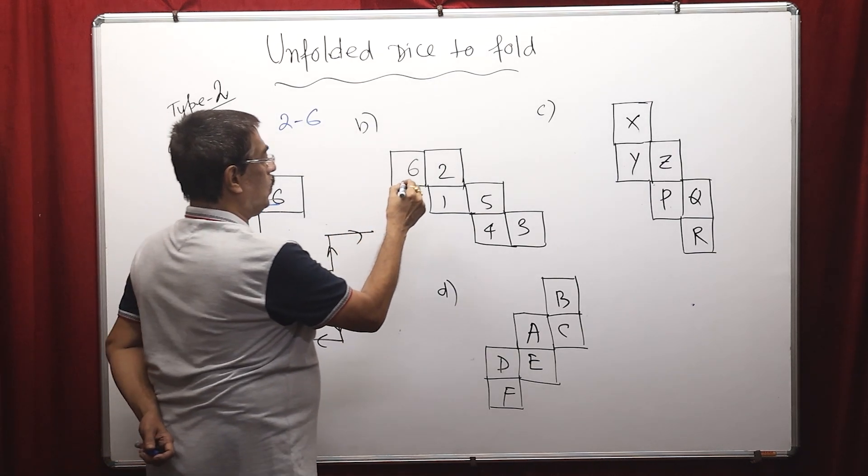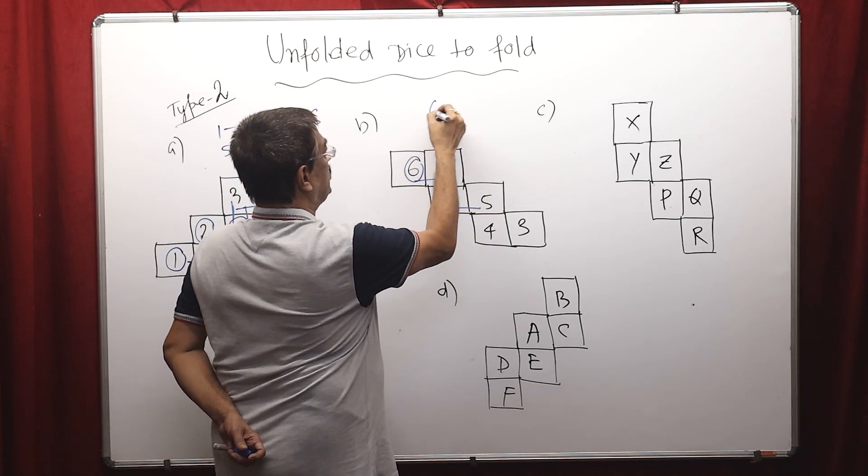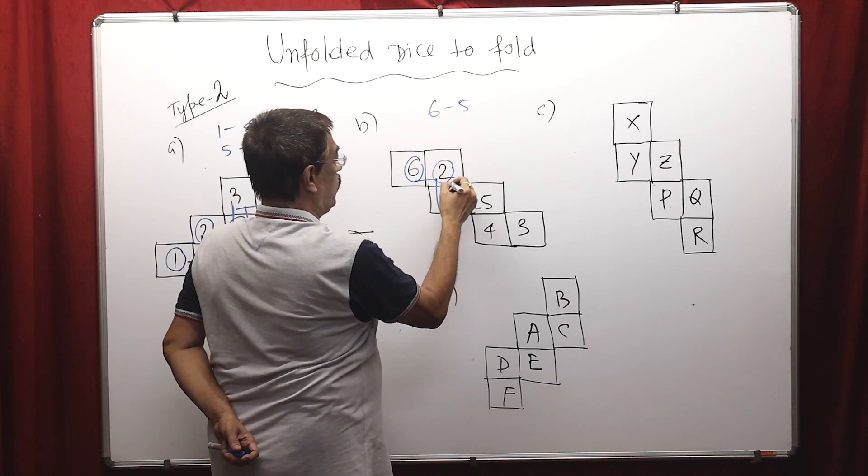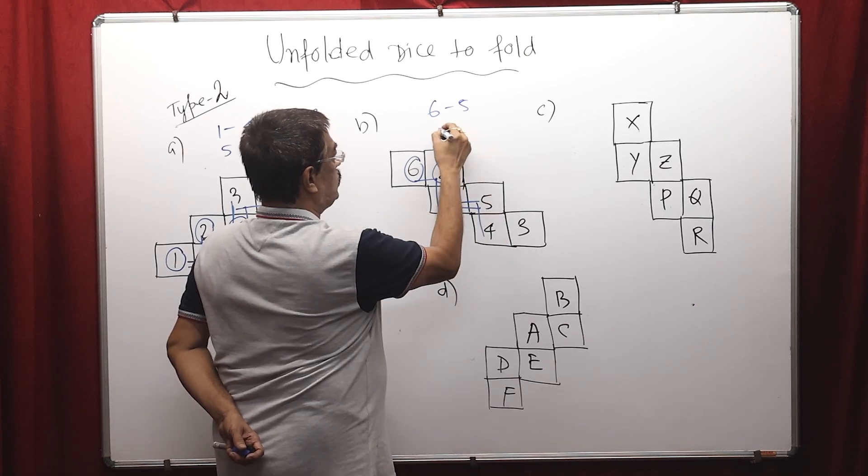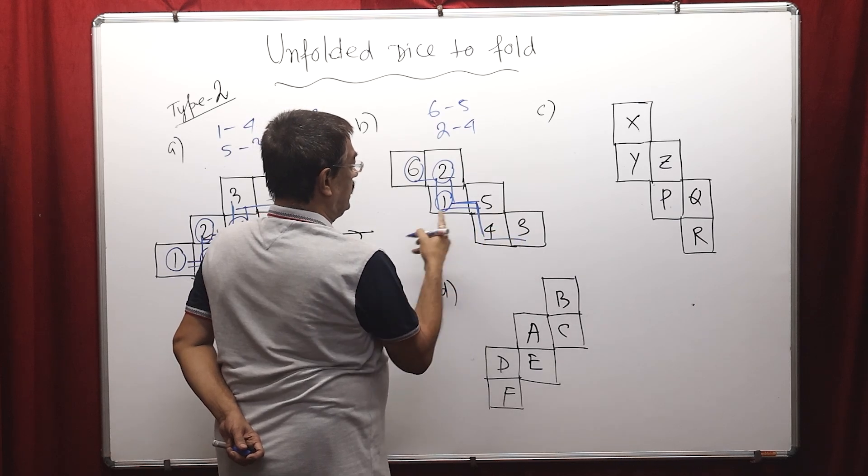Applying same rule. Starting from here: 1, 2 and 3 - 6 opposite 5. Starting from here: 1, 2 and 3 - 2 opposite 4. Starting from here: 1, 2 and 3 - so 1 opposite 3.